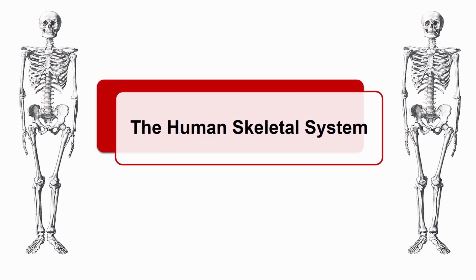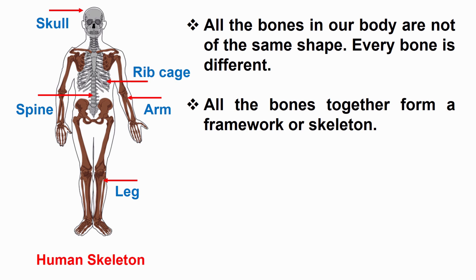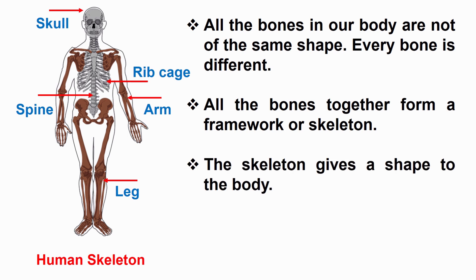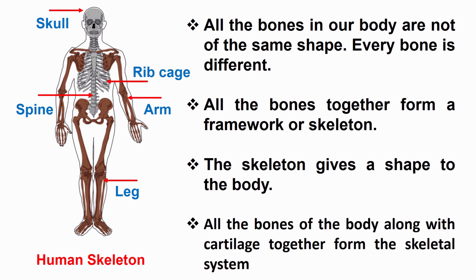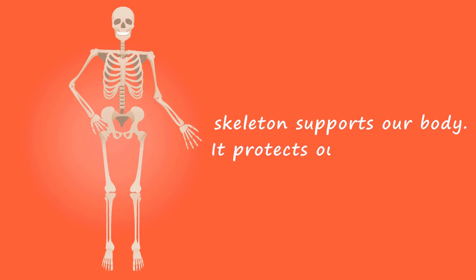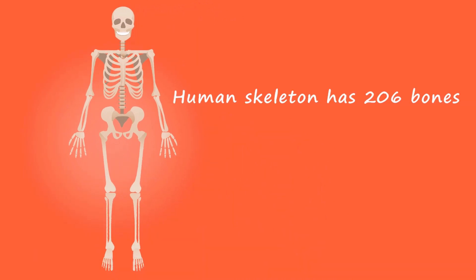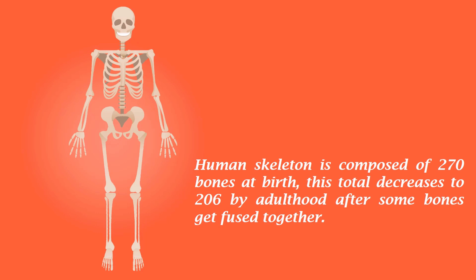The Human Skeletal System. All the bones in our body are not of the same shape — every bone is different. All the bones together form a framework, or skeleton. The skeleton gives a shape to the body. All the bones of the body along with cartilage together form the skeletal system. Human skeleton is made up of 206 bones. Note that the human skeleton is composed of 270 bones at birth, and this total decreases to 206 by adulthood after some bones get fused together.